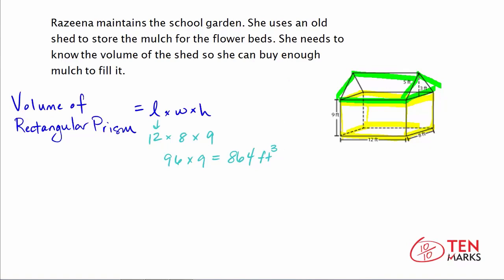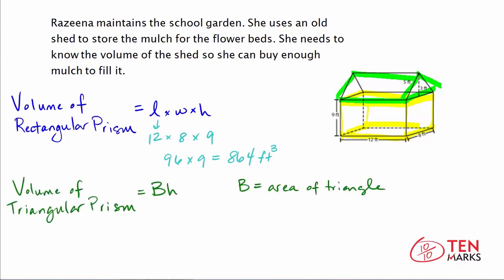Now let's find the volume of the triangular prism. The volume is found by multiplying the base times the height, where the base is the area of the triangle. The area of a triangle is 1/2 times the base times the height. The base of the triangle is 8 feet — the same as the width of the rectangular prism. The height is the dashed line of 3 feet. So 1/2 times 8 is 4, times 3 is 12 feet squared.